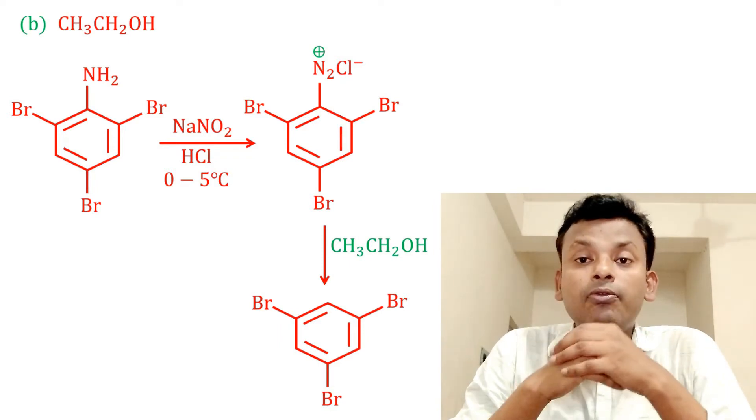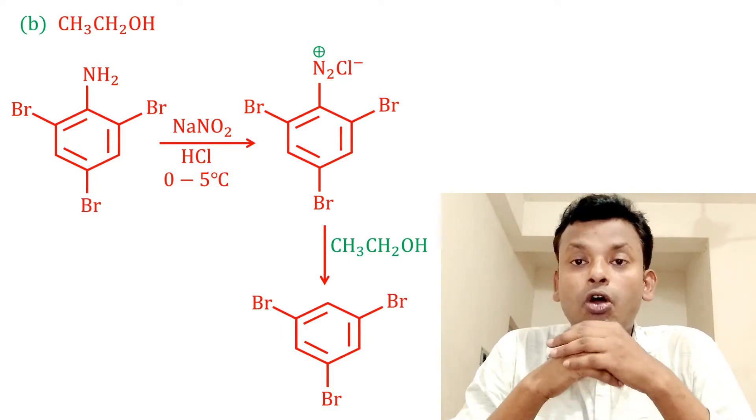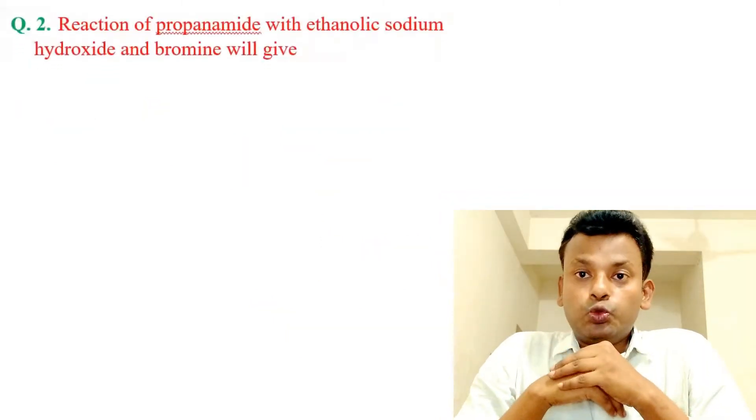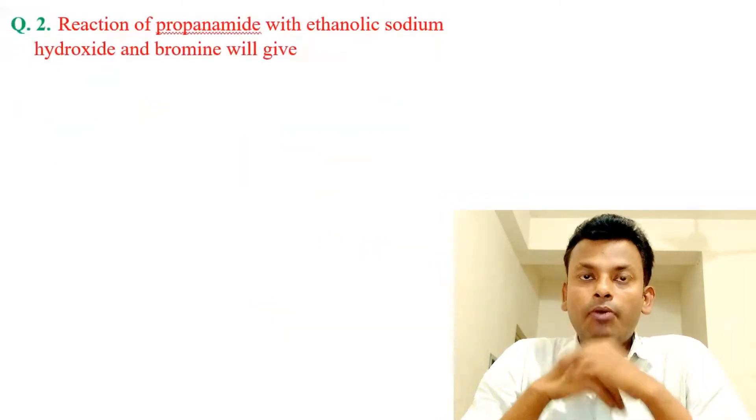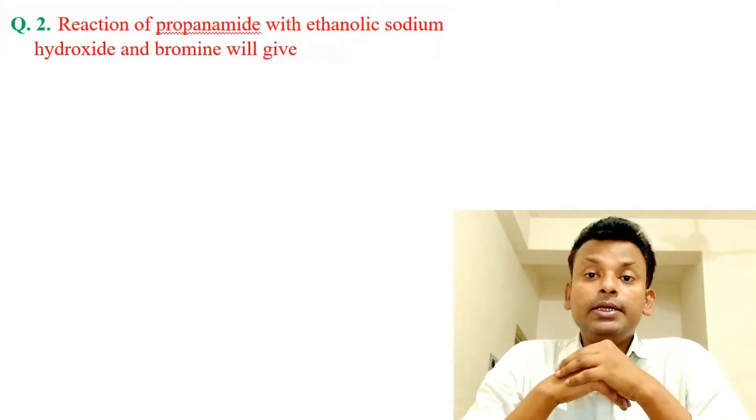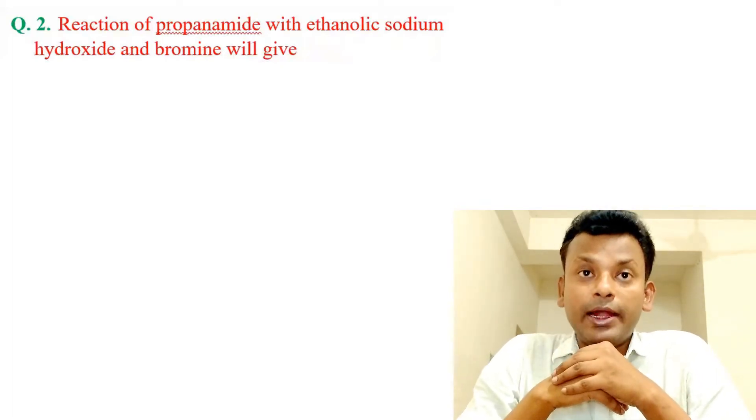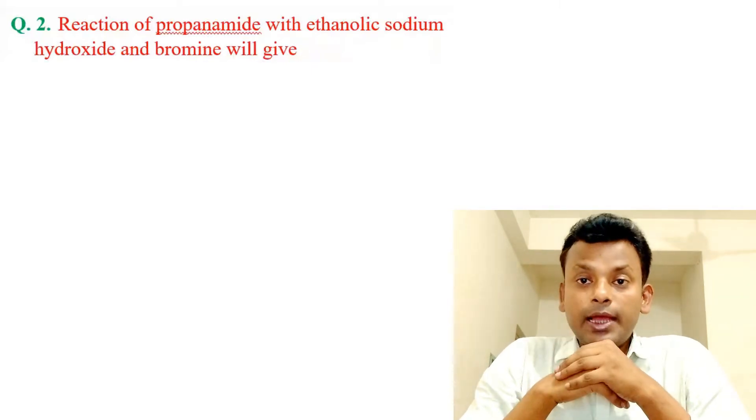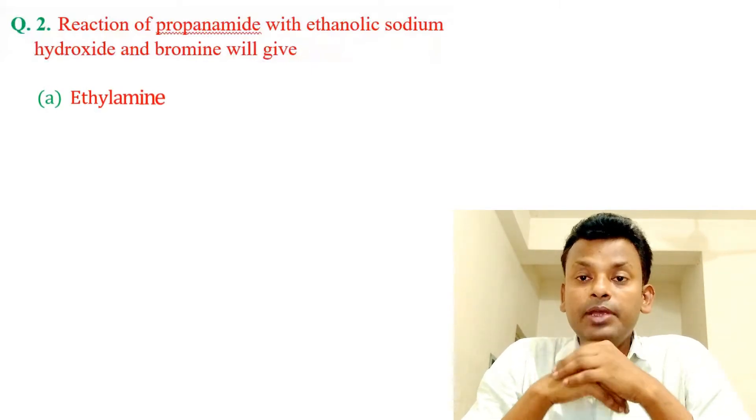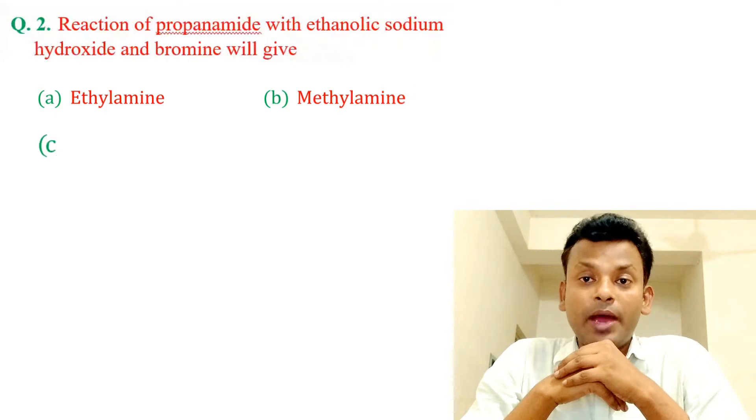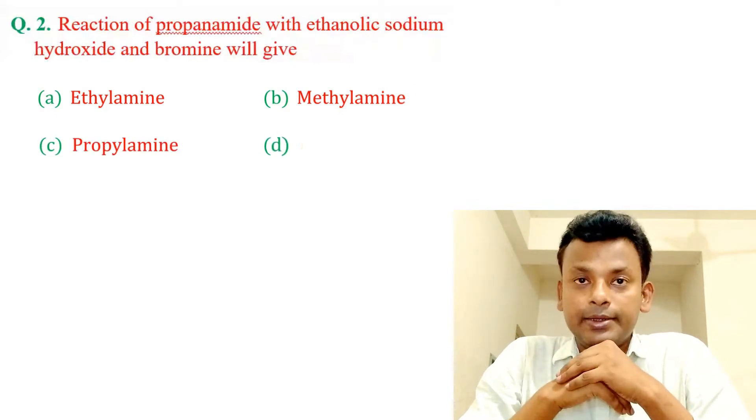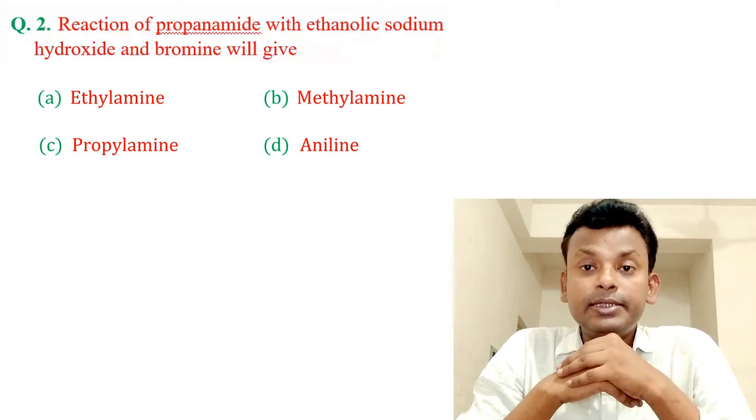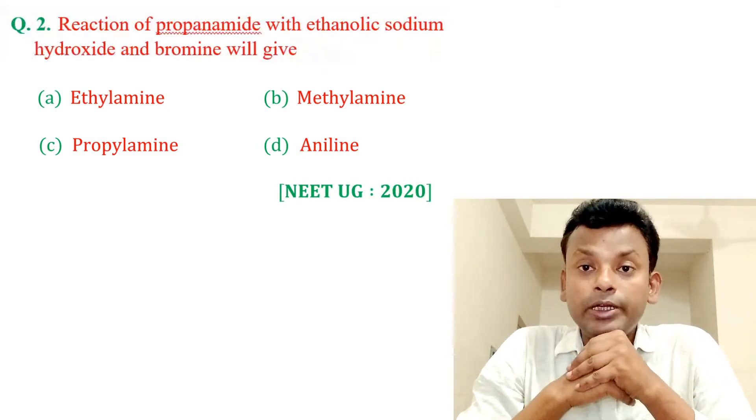So option B is correct answer. Question number two: Reaction of propanamide with ethanolic sodium hydroxide and bromine will give. Option A ethylamine, B methylamine, C propylamine, D aniline. This question was set in NEET exam 2020.